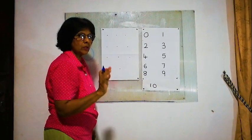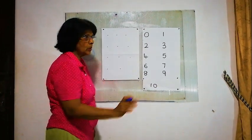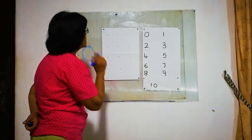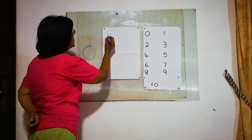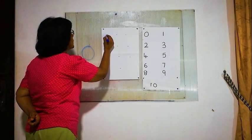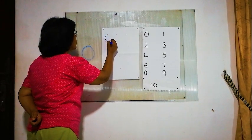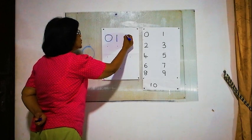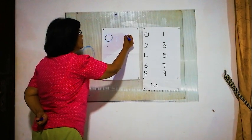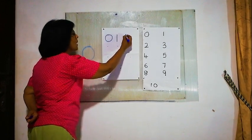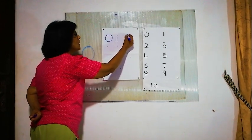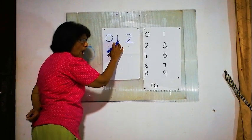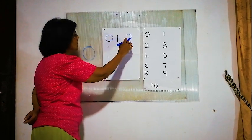Today, I am going to teach you the number 0. Now first, we have to write the number 0, then 1. After 1, 2.